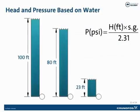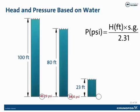To practice: if we had a column of water 100 feet tall, a pressure gauge at the bottom would read 100 divided by 2.31, which equals 43.29 PSI. For a column of water 80 feet tall, that would be 80 divided by 2.31, giving us 34.6 PSI. For a column of water 23 feet tall, that would be 23 divided by 2.31, giving us roughly 10 PSI — or more precisely, 9.957 PSI.